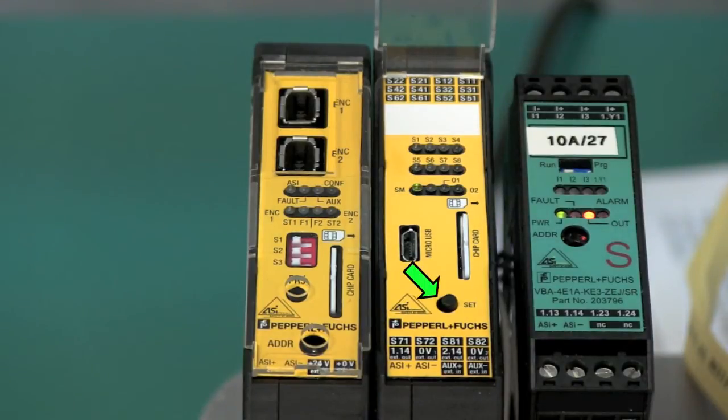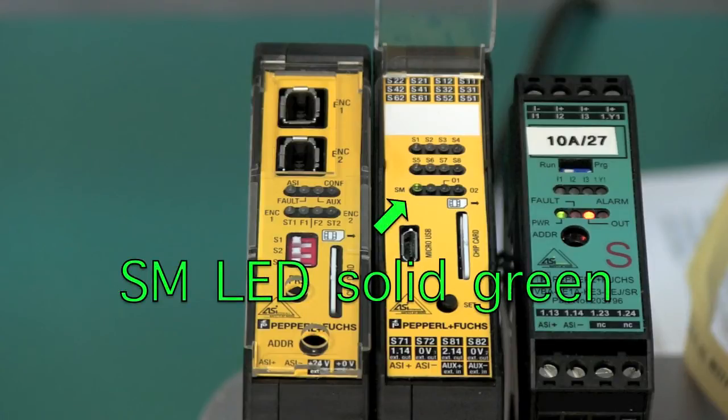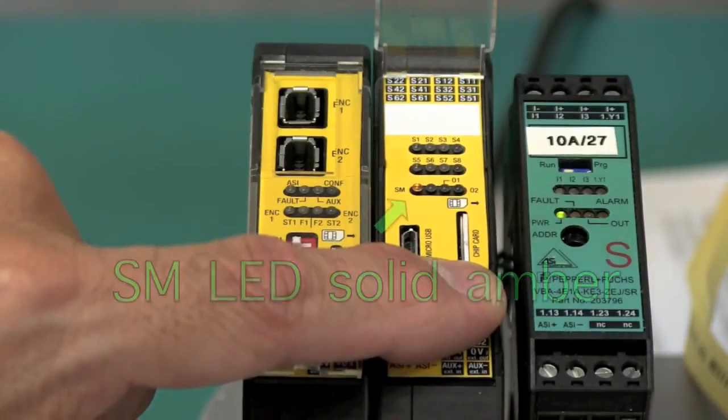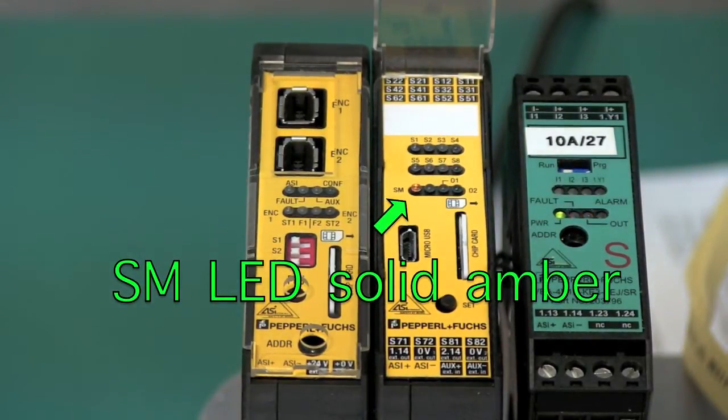Here we have a set button and I will push the set button for approximately one second until the SM LED turns from green to amber. At this point, I will reconnect the new e-stop.